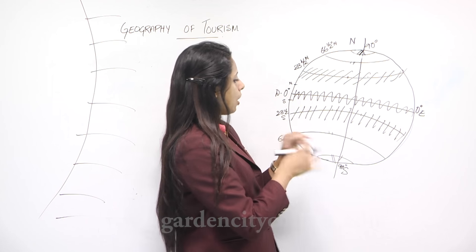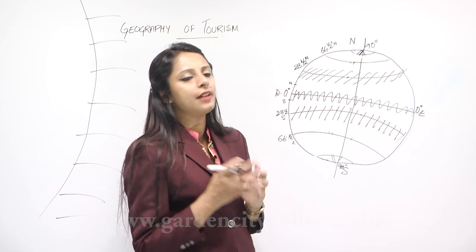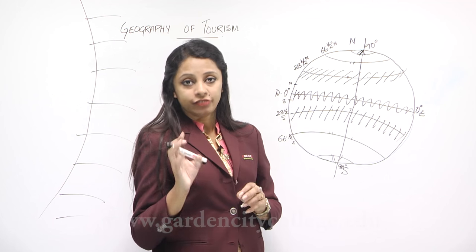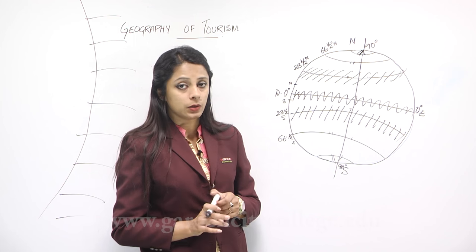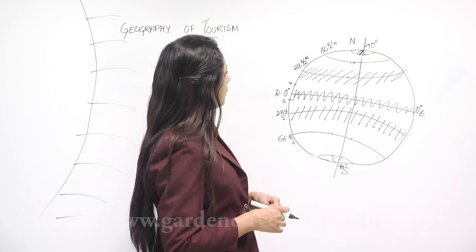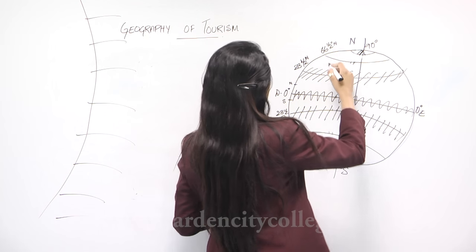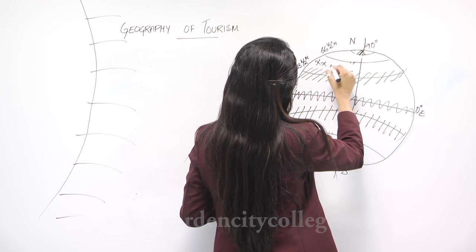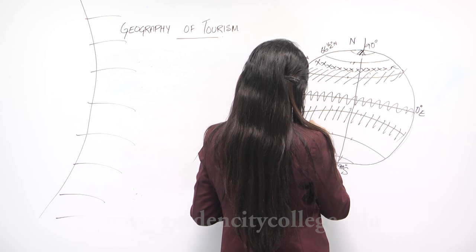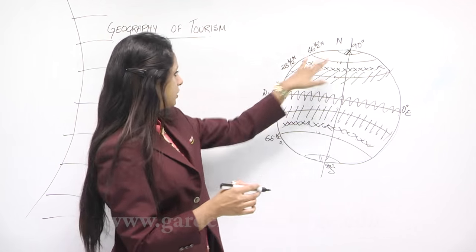Moving further toward the poles, we reach the tundra region. This region is very close to the poles and is very cold. Parts of Russia fall in this area, and not much vegetation is found — mainly shrubs and short trees. Russia is one country largely covering this tundra region.